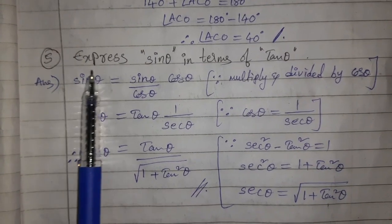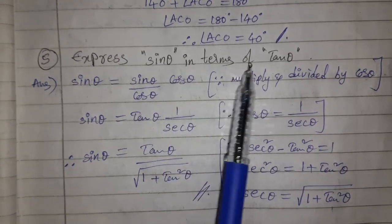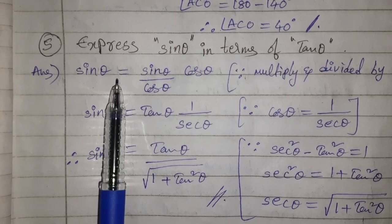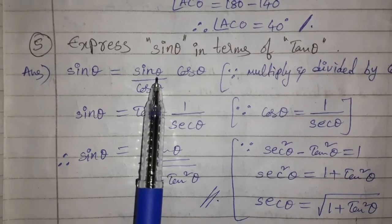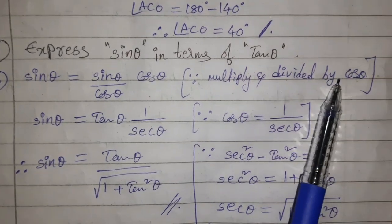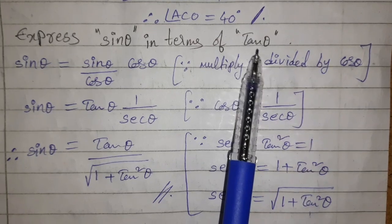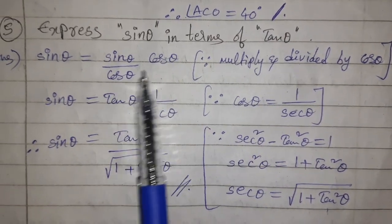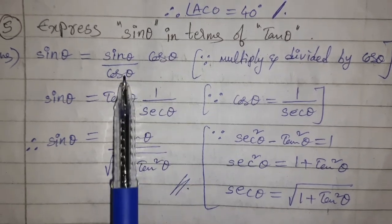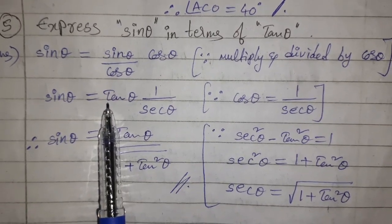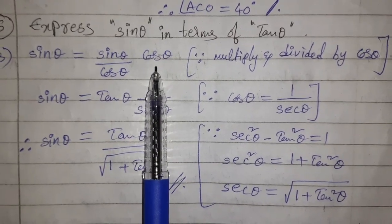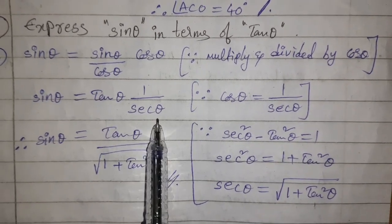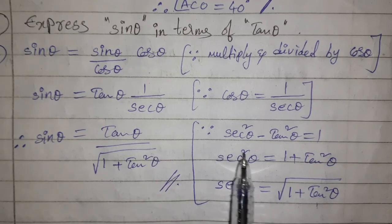Fifth question: express sin θ in terms of tan θ. Write sin θ, then multiply and divide by cos θ to get tan θ in the expression. sin θ = (sin θ / cos θ) × cos θ = tan θ × (1/sec θ).